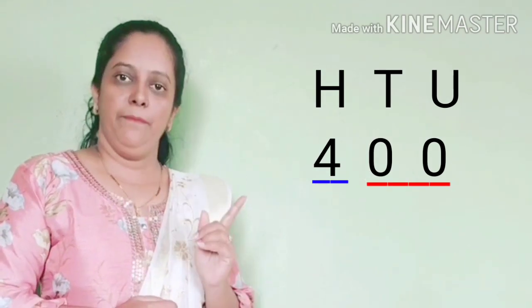Here comes the next one. Look at this number very carefully. We are going to make two parts: the first is the 10th and units group, and the second one is the 100th group. So we read it as 400, because there is no 10th and no unit. We read it as only 400.